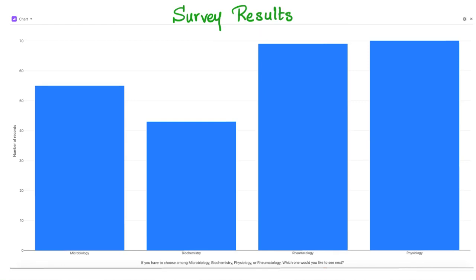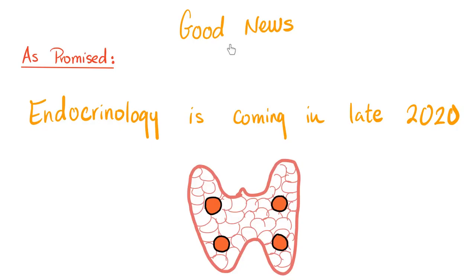The survey is over and here are the results. The question was: if you had to choose among microbiology, biochemistry, physiology, or rheumatology, which would you like to see next? The winner is physiology, with a very tiny margin over rheumatology. In the next few weeks you will see videos on physiology — including cardiac physiology, neurophysiology, autonomic physiology, kidney physiology, and GI physiology. We'll also continue the rheumatology playlist covering lupus, scleroderma, and the vasculitides. Endocrinology playlist is coming in late 2020.